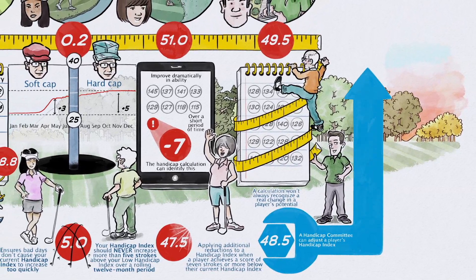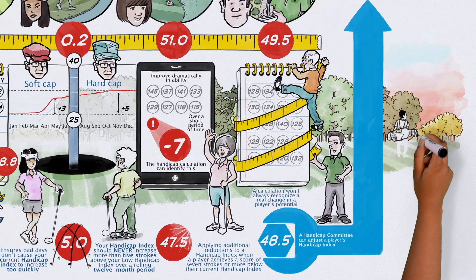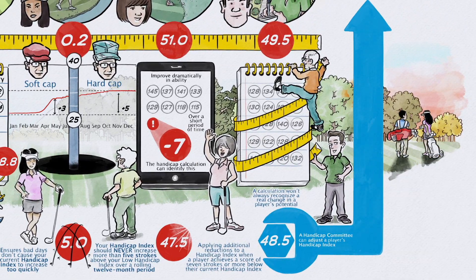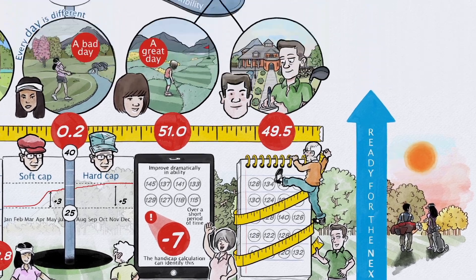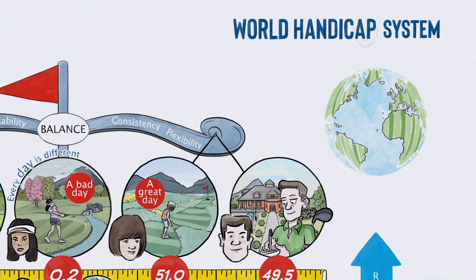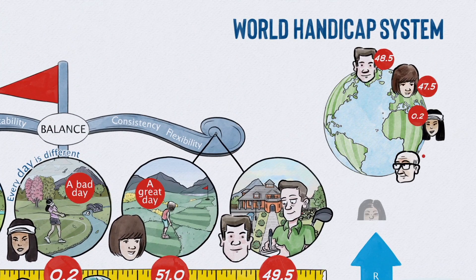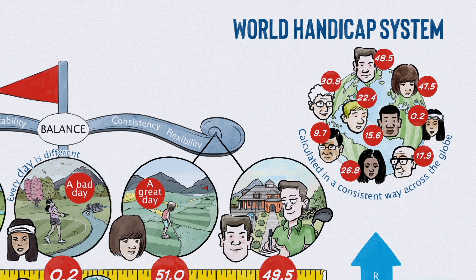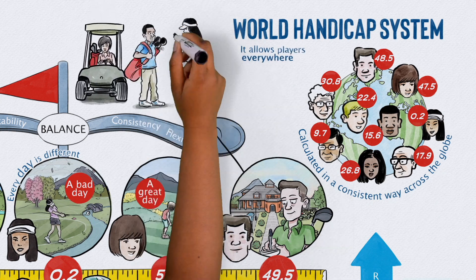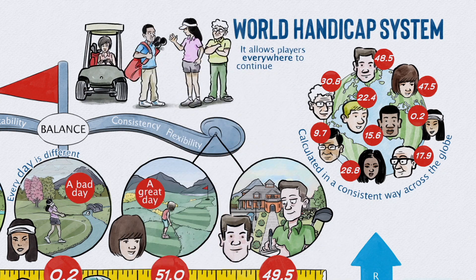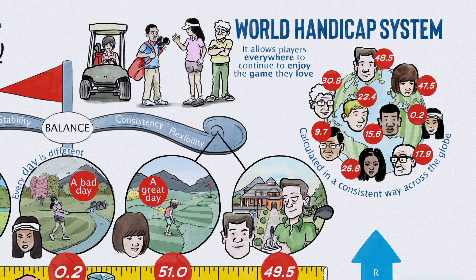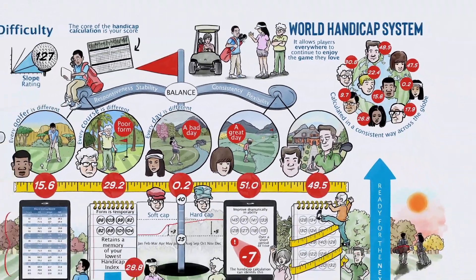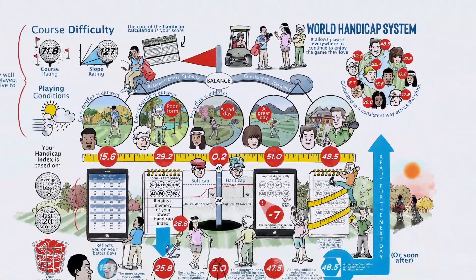All these elements come together as your handicap index is revised promptly, ready for the next day or soon after. The World Handicap System delivers a handicap index to all players that is calculated in a consistent way across the globe. It allows players everywhere to continue to enjoy the game they love, wherever they play and whoever they're playing with or against.